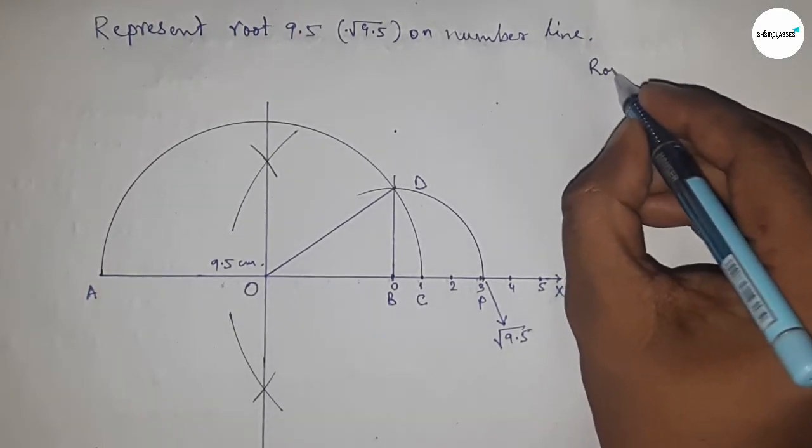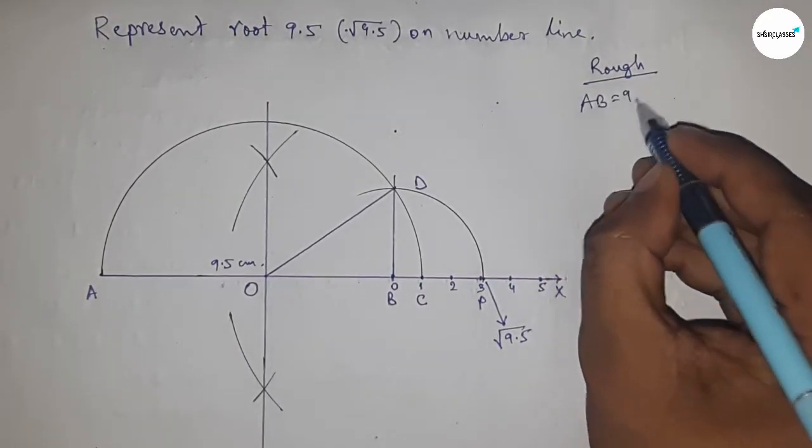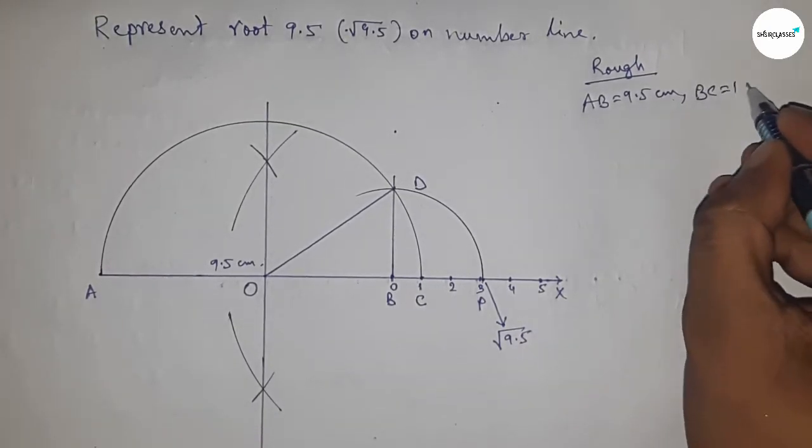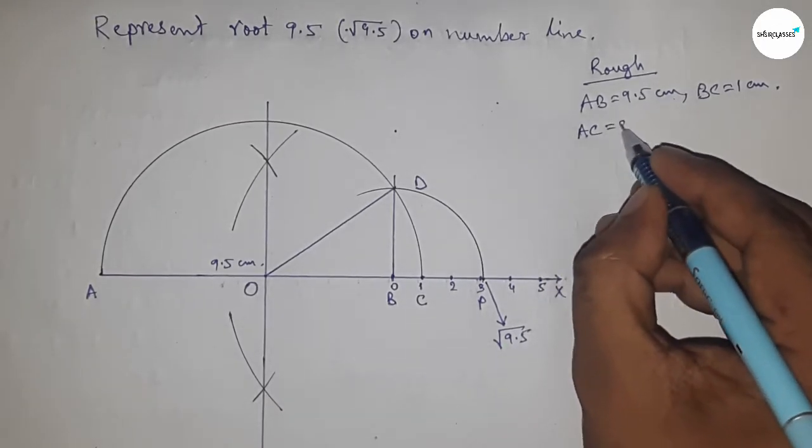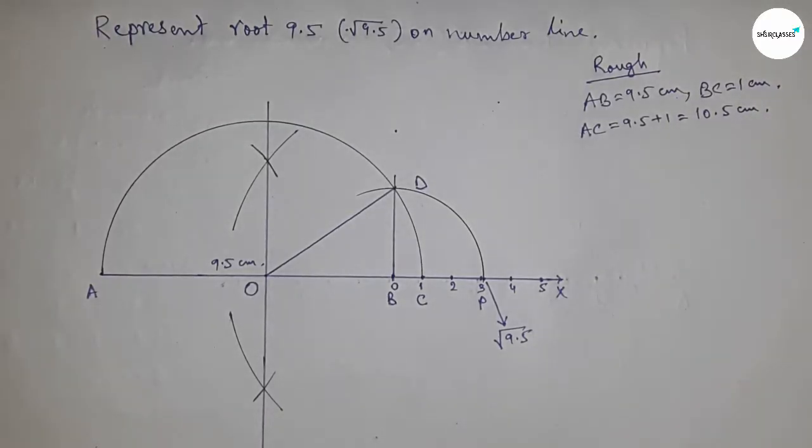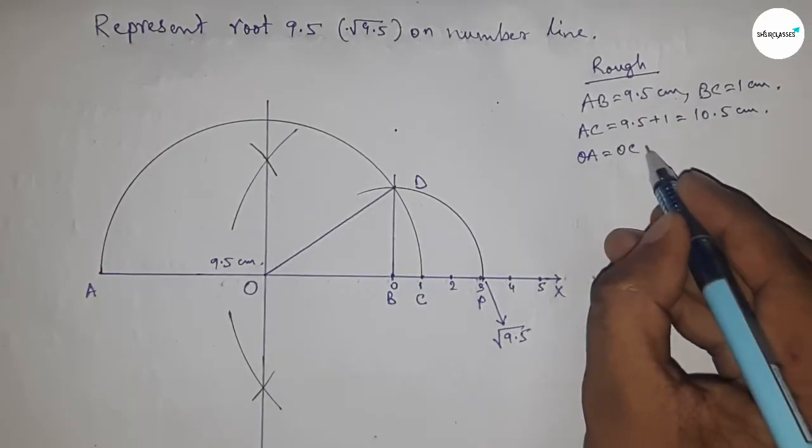Now let's discuss the calculation. Given AB = 9.5 cm and BC = 1 cm, we can write AC = 9.5 + 1 = 10.5 cm. The radius OA = OC = OD = 10.5/2 cm. Distance OB = OC - BC = 8.5/2 cm.